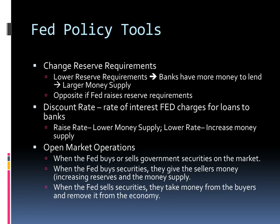The Fed has a few policy tools to change the money supply. The first is changing the reserve requirements of banks. If the Fed lowers the reserve requirements, banks can lend more money, which will increase the money supply. If the Fed raises the reserve requirements, banks are forced to hold more money in reserve, which will decrease the money supply.